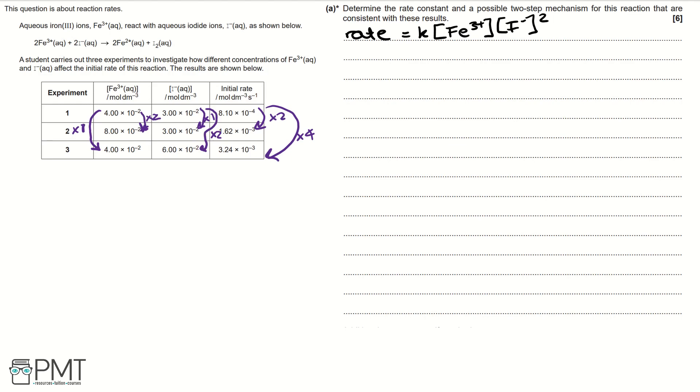We can then use this information to work out K. K equals the initial rate, so if we take experiment one and its values, it'd be 8.10 times 10 to the minus 4 divided by 4 times 10 to the minus 2 multiplied by 3 times 10 to the minus 2 to the power of 2. That gives us a K value of 22.5.